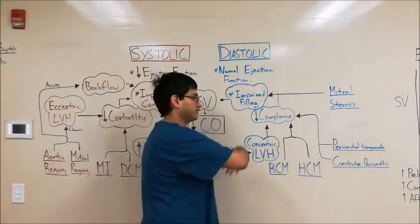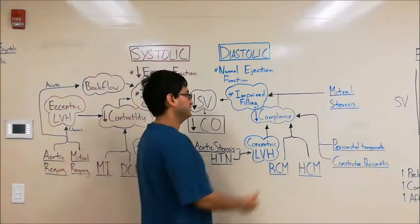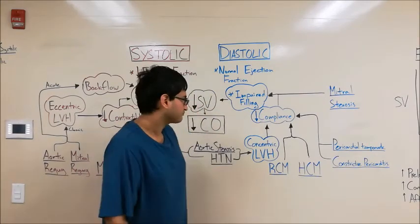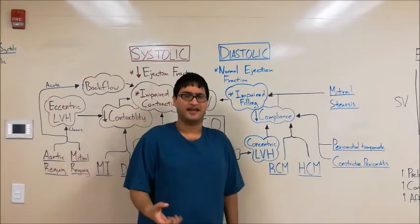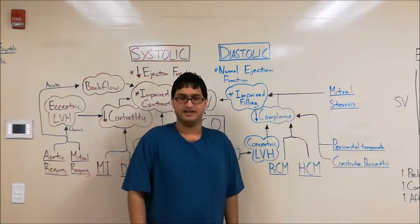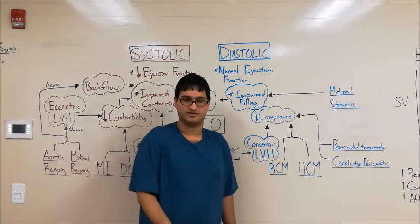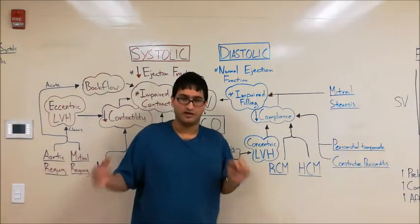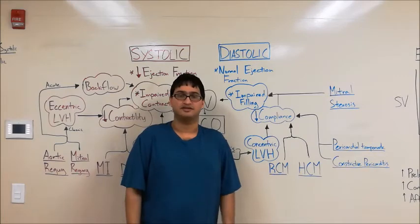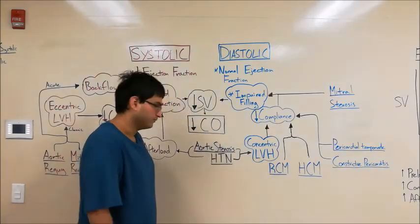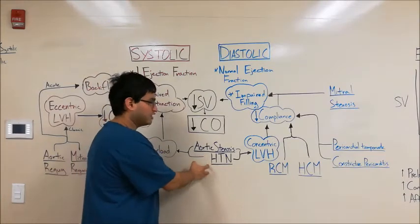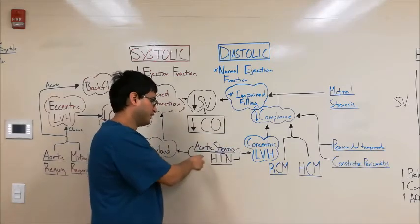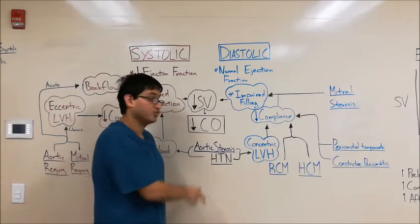Other causes of diastolic heart failure center around the concept of decreased compliance — think of it as increased stiffness of the ventricle. If your ventricle is stiffer, it fills with less blood, decreasing end-diastolic volume and cardiac output. Two of these causes are aortic stenosis and hypertension, written in purple because both can also lead to systolic heart failure, which we'll get to later. Both of these disease processes lead to an increased afterload.